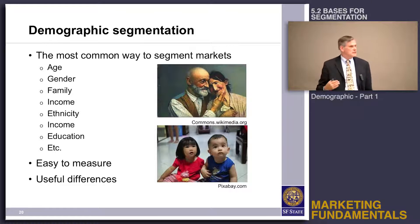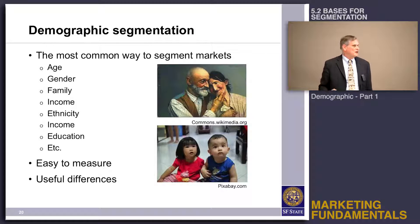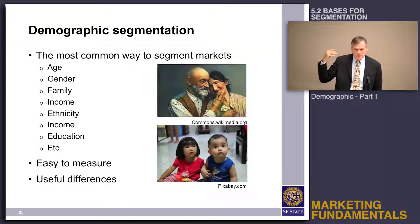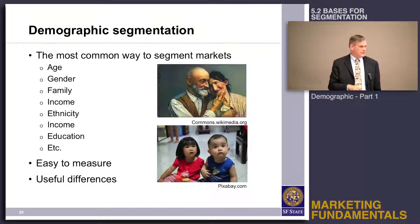And then some of the other things that aren't easily visible but not that hard to figure out — income, education — they're easy to measure and they're useful differences.